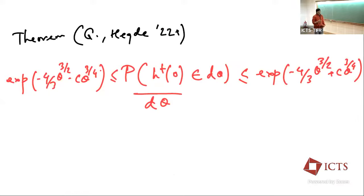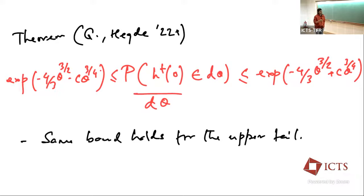This is the main result, joint with Milind. Looking at the density of the height function at zero: the density at theta to theta+dθ is like exp(−(4/3)θ^{3/2}) plus a correction term that is not super sharp. In particular, you can integrate this to get the same bound for the upper tail. This holds uniformly for all T bigger than one — the behavior is somewhat different when T goes to zero, where Gaussian behavior dominates rather than KPZ behavior.